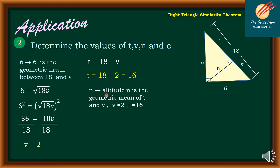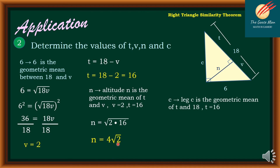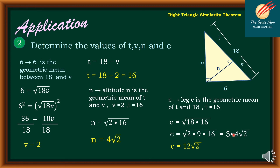N is the altitude and the geometric mean of T and B. With B equal to 2 and T equal to 16, N equals the square root of 2 times 16. Since 16 is a perfect square, N equals 4 square root of 2. Finally, C is the geometric mean of T and 18. So C equals the square root of 18 times 16. Factoring: square root of 2 times 9 times 16 gives 3 times 4 times square root of 2, so C equals 12 square root of 2.